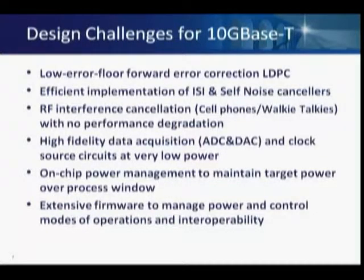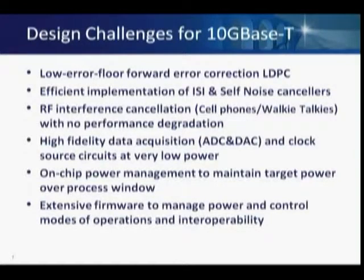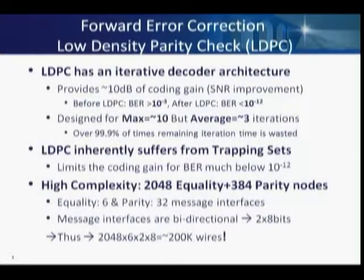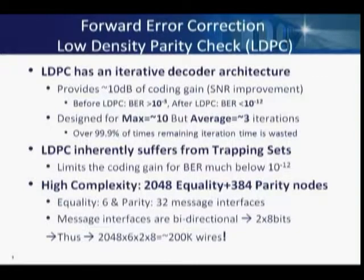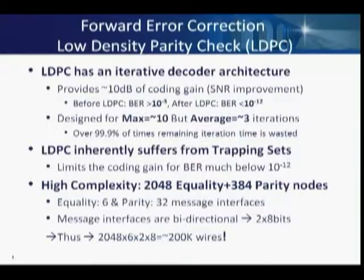LDPC provides about 10 dB of coding gain, taking the bit error rate from 10^-3 to better than 10^-12. Key learnings at Aquantia: ideally LDPC should be designed to handle 10 iterations — iterations being when messages are passed from parity to equality nodes in computing and correcting errors. But generally, almost all the time, three iterations are more than sufficient, and we leverage this fact in our LDPC design.